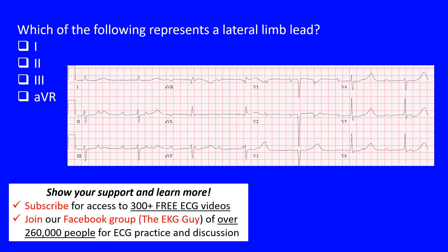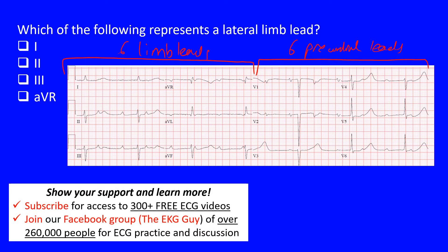We have a 12-lead ECG — no rhythm strip here, just the 12 leads. On the left side we have our limb leads, and on the right side we have the precordial leads. There are six limb leads and six precordial leads. From beginning to end of the ECG represents 10 seconds, with each lead being 2.5 seconds — so the standard ECG gives you 10 seconds in duration.